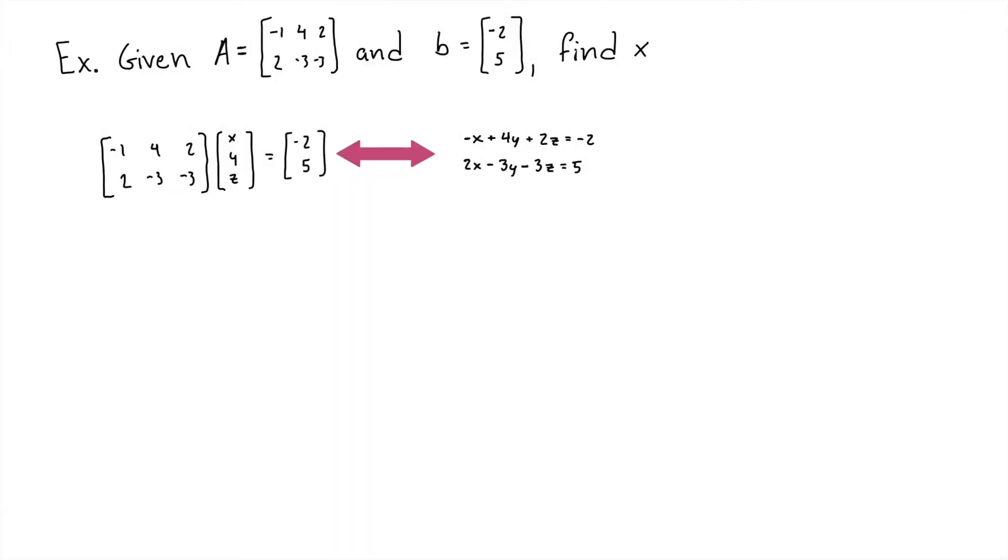For our next problem, I'm going to go through the row operations pretty quickly, so feel free to pause the video whenever you need. We're given the matrix A as well as B, so we're looking for X. We're going to write our givens in the form AX equals B. What we want to realize is that we can write this in augmented matrix form because we have our linear equations. If we put this into an augmented matrix, we get this right here. Now we're going to use row operations to simplify this.